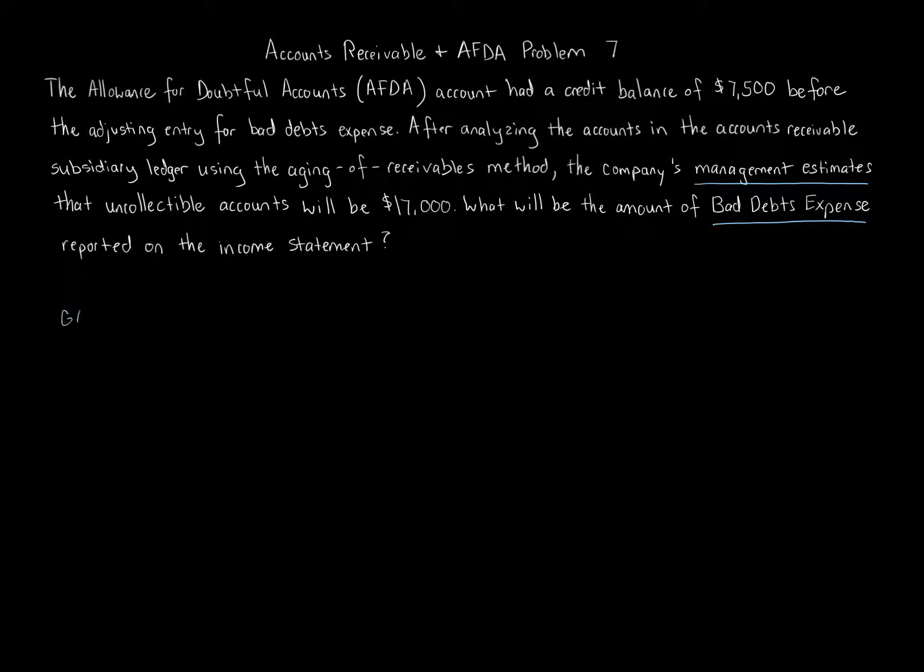Now remember, under GAAP, the method that's required is the allowance method when it comes to bad debt expense, writing off bad debts in Accounts Receivable. The allowance method understands that businesses, not all their customers are going to pay off what they owe. So at the end of each year, we do an adjusting entry to estimate the amount of bad debts expense to be written off with respect to the future, future Accounts Receivable to be written off. We are doing that in this question. We are estimating what bad debt expense is supposed to be with respect to this income statement for this year.